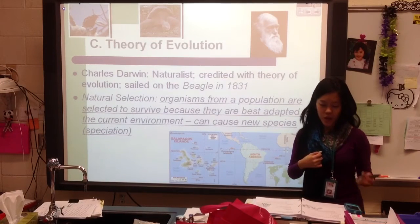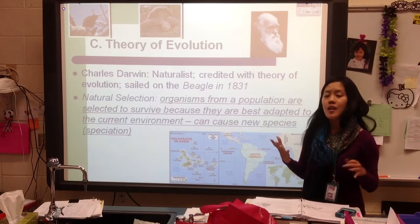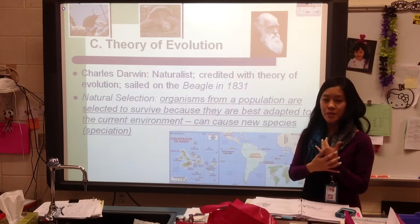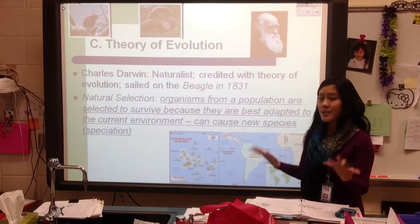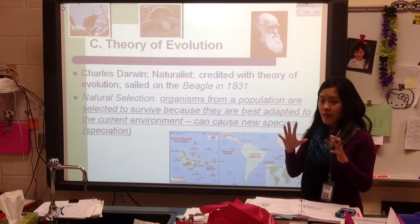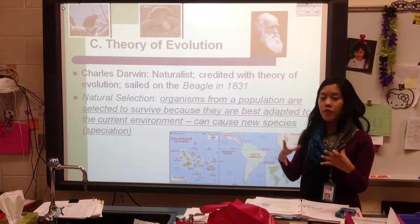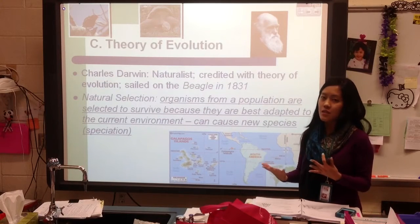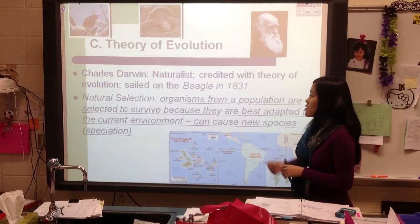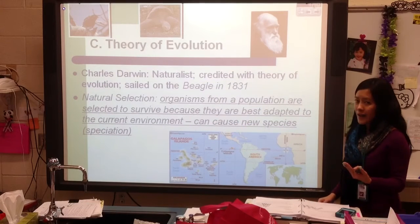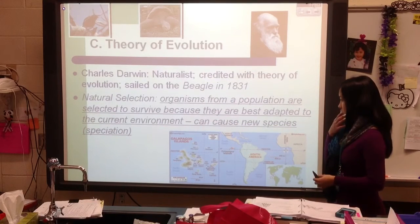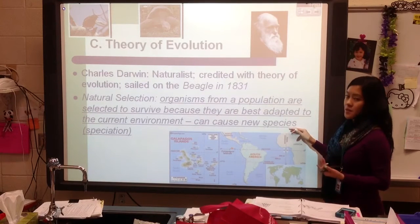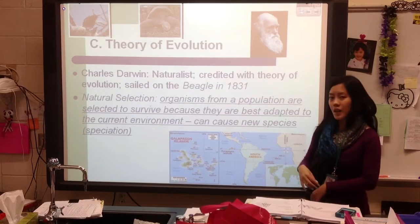For example, maybe one year a puppy dog grew a lot more fur than the rest of the puppies it was born with. If it ends up being a really cold winter, that puppy with more fur — just by chance, just by the genetics and the genes it received — is going to survive and be able to pass on its genes. Natural selection can eventually lead to new species being created, and that's called speciation.